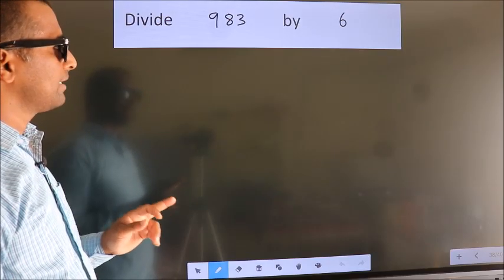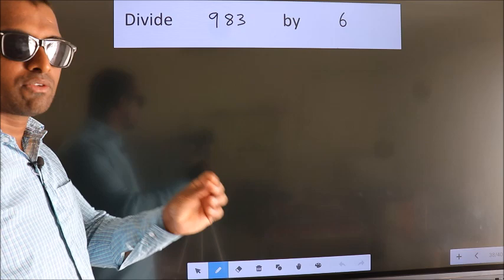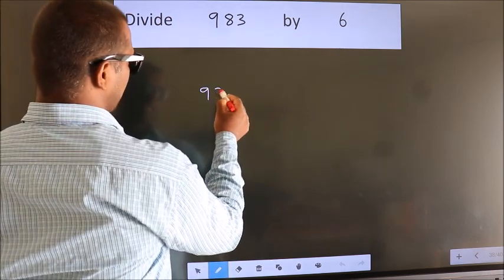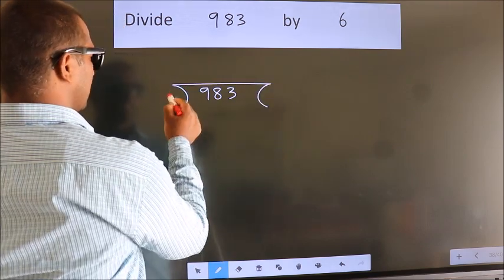Divide 983 by 6. To do this division, we should frame it in this way: 983 here, 6 here.